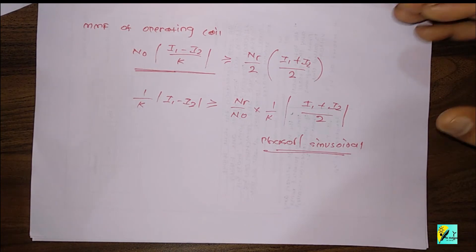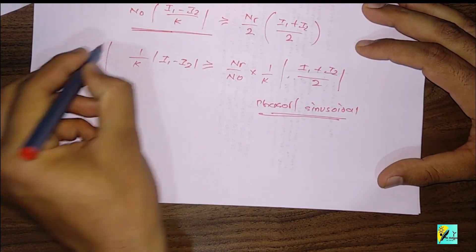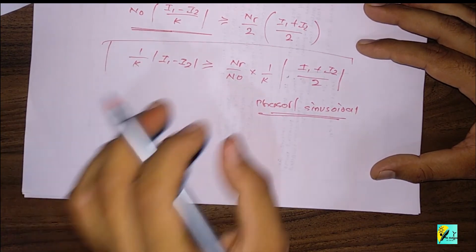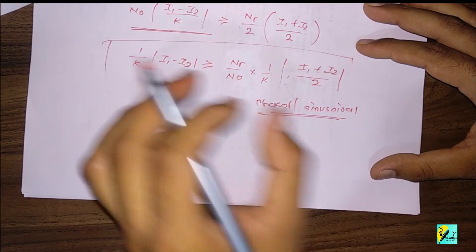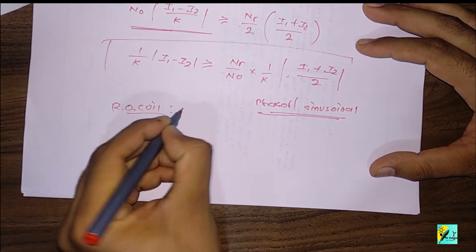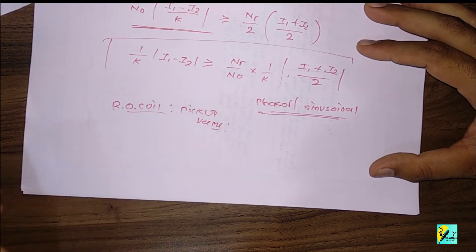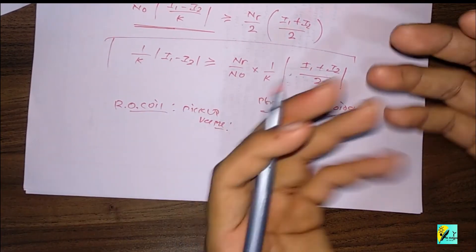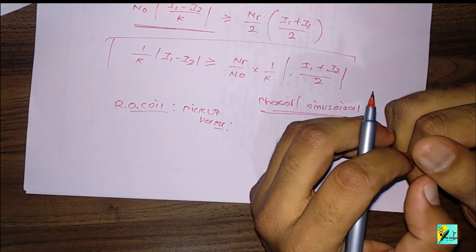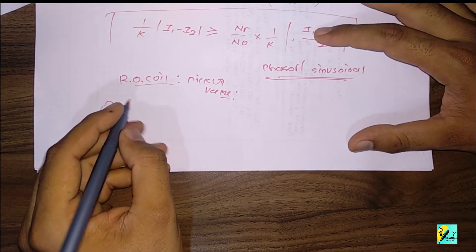In this particular case the relay will also operate under a fault condition. We know that the relay operating coil has a pickup value. The pickup value is the minimum force required to operate the relay.